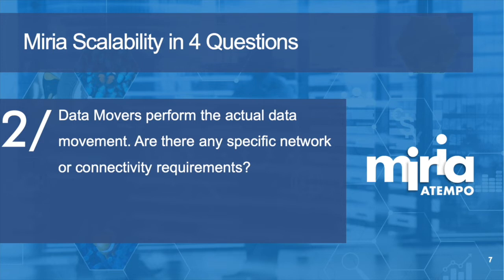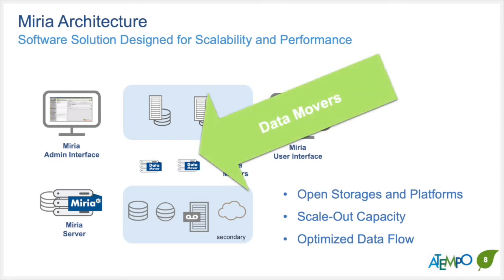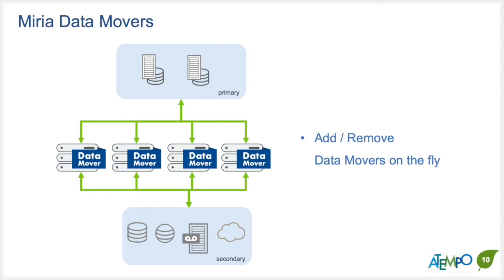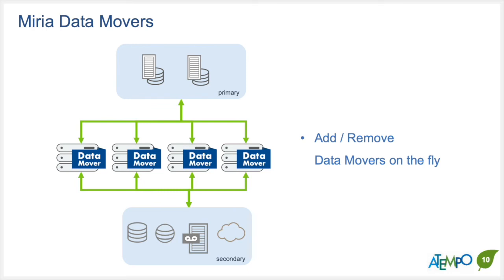Question two: Miria data movers perform the actual data movement. Any specific requirements in terms of network or connectivity? We can mix and match those types of interconnects on our data movers. It doesn't matter to us whether we're using IP over InfiniBand, InfiniBand, or straight IP network technology. We can also use Fibre Channel for talking out to tapes. It's a hot-scalable solution, so we can add data movers on the fly — spin them up or down. You don't pay for extra data movers; we just provide the software. The data movers are your hardware, and you can add or remove them as needed to increase or decrease performance.